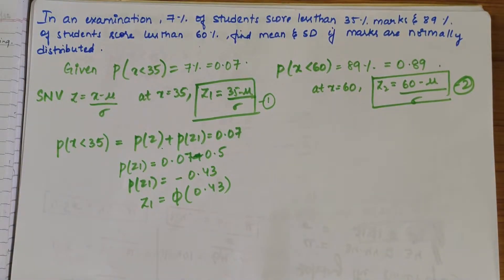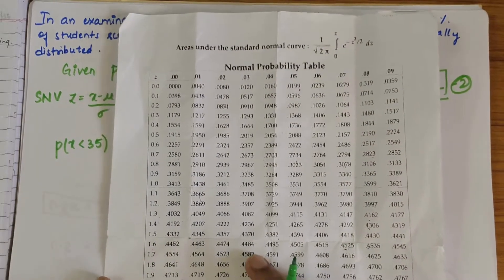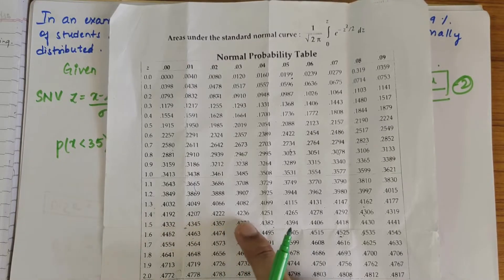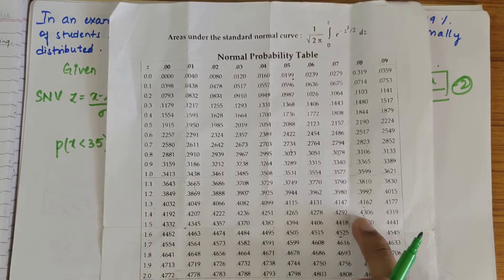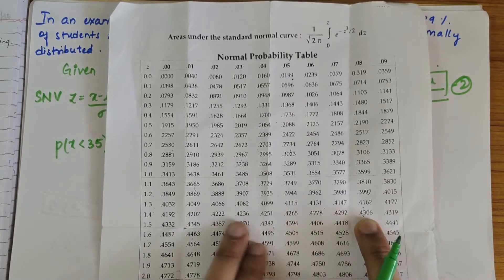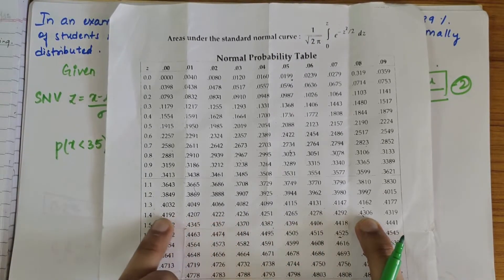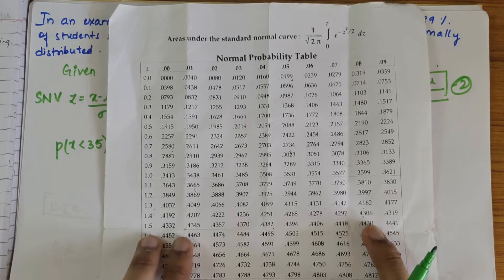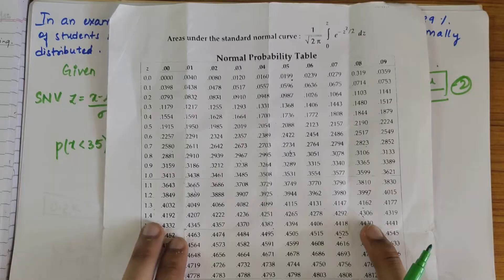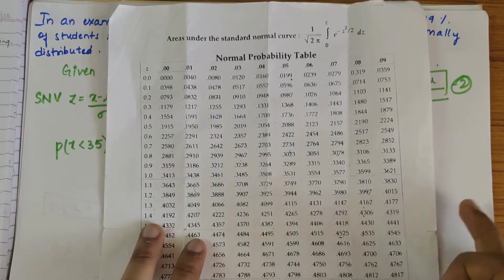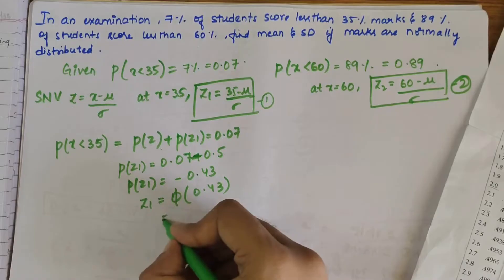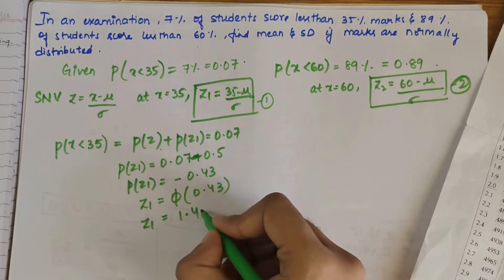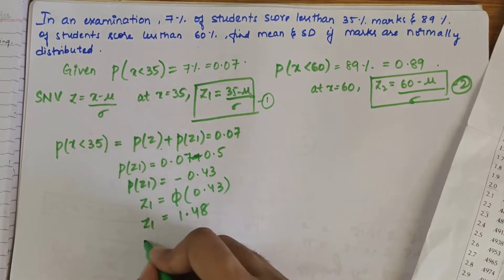Phi of 0.43 we can find out the value using the normal probability table. So 0.43 is here. That is 1.48. So Z1 value would be 1.48.